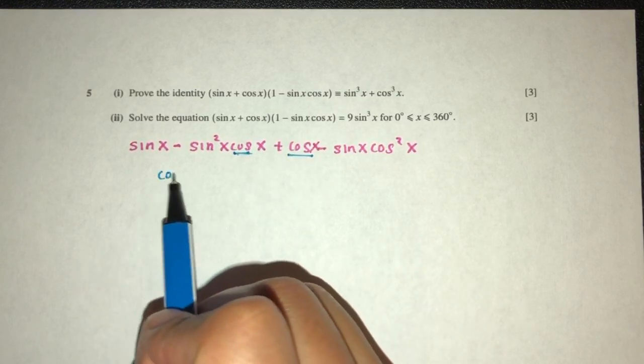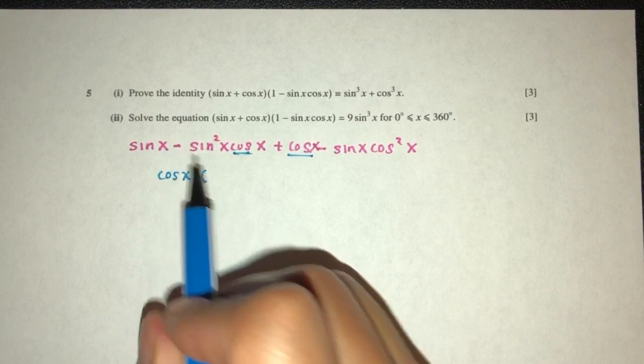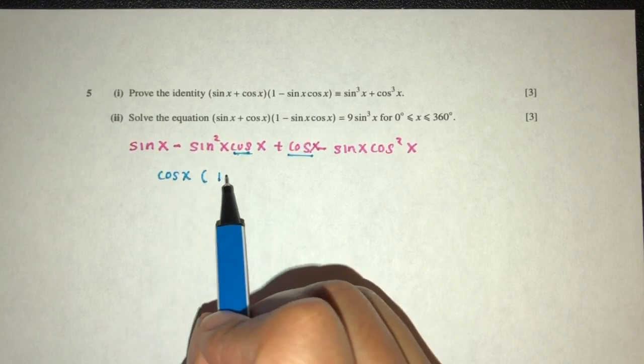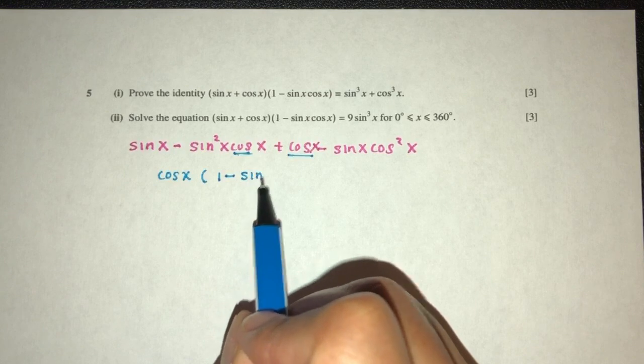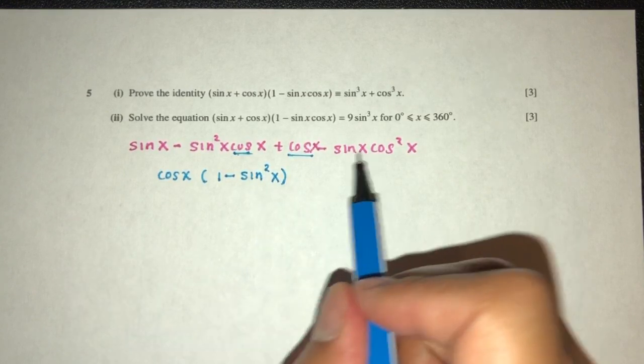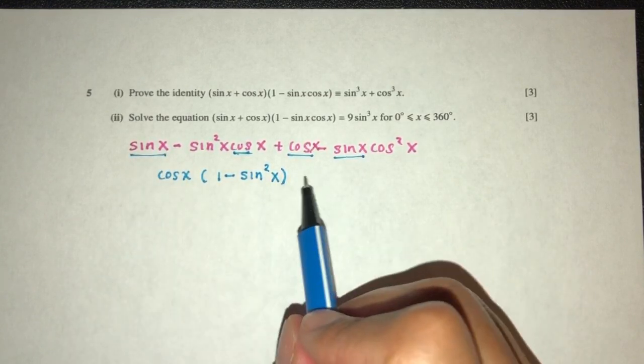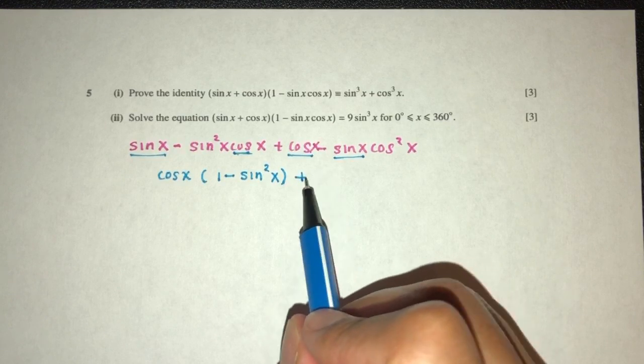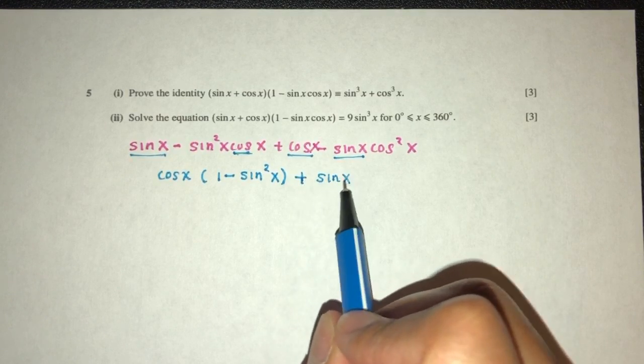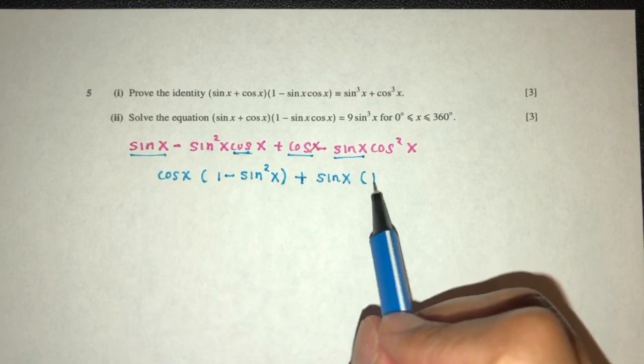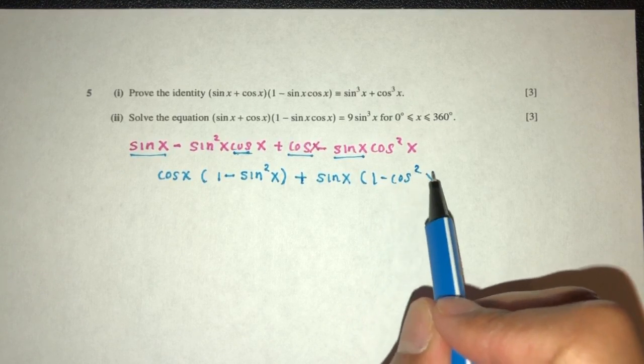You will have cos x and here we have 1 minus sin²x. Here we have this, we have 2 plus sin x. Here you will have 1 minus cos²x. Right.